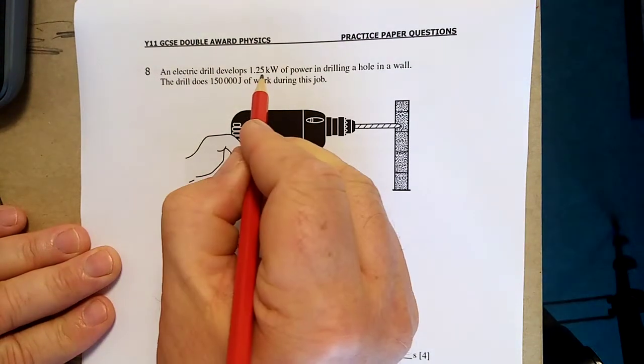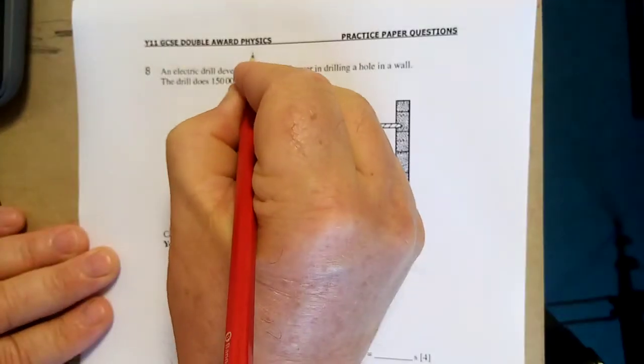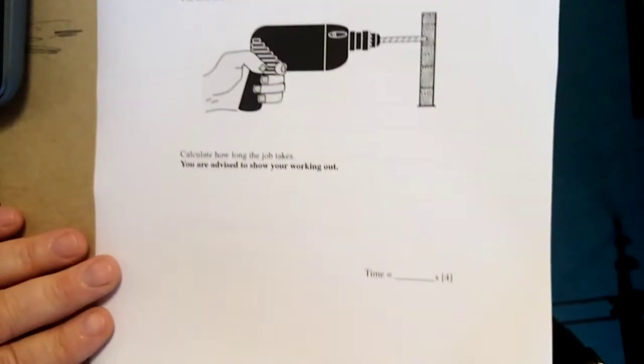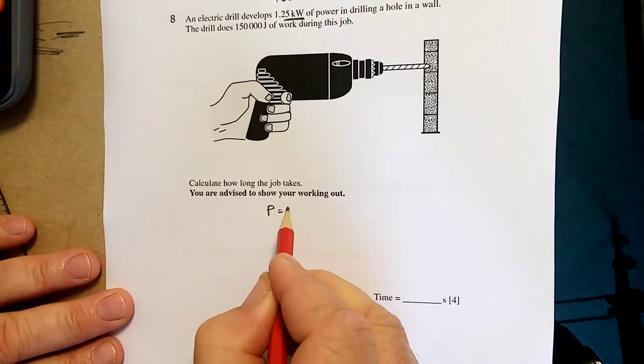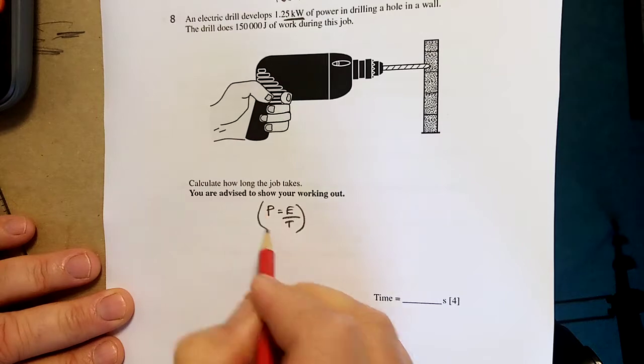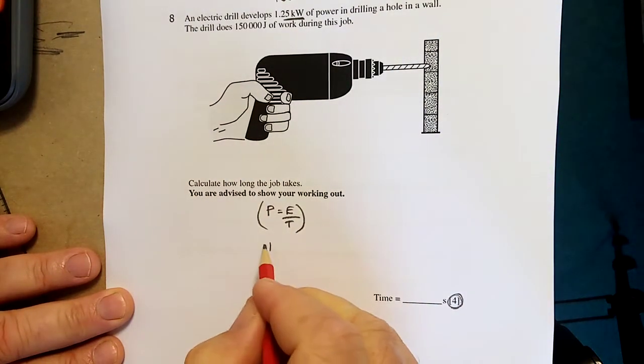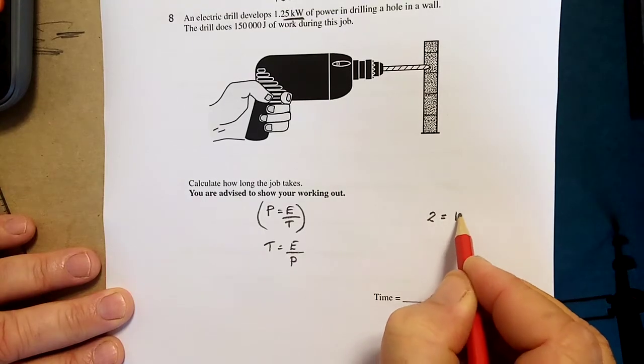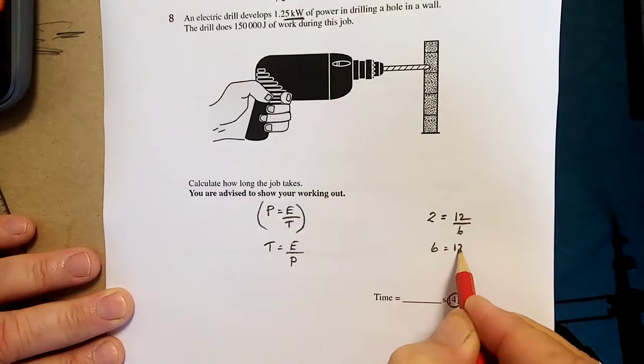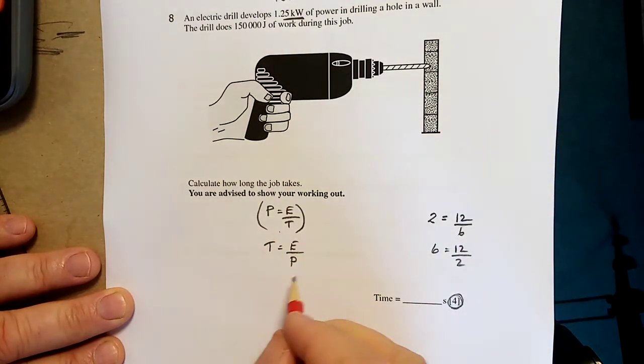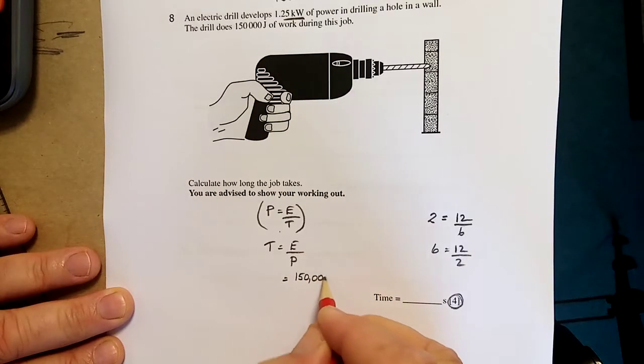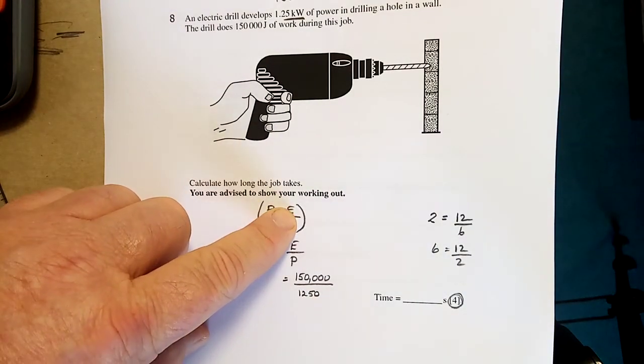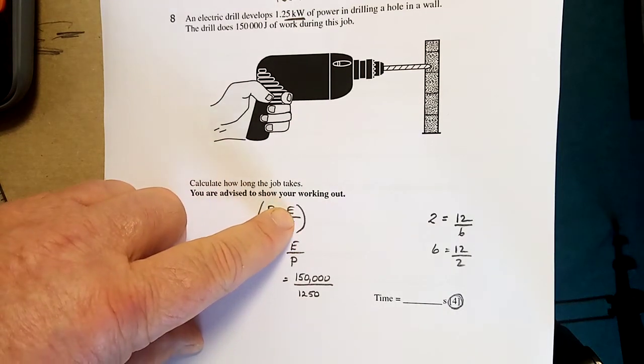An electric drill develops 1,250 watts of power drilling a hole in the wall. The drill does 150,000 joules. Calculate how long it takes. Power equals energy over time. Mark for that. Look, four marks for this one. Time equals energy over power. You see if you don't know how to rearrange this, you're in trouble. 12 over 2 is equal to 6, so 6 is equal to 12 over 2. Need to know the formula. So what's the energy? 150,000 over the power, 1,250. That's 120 seconds.